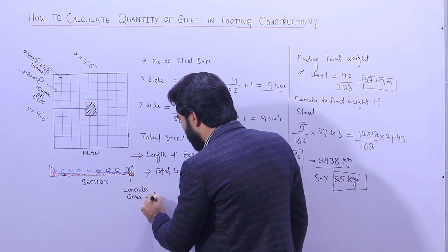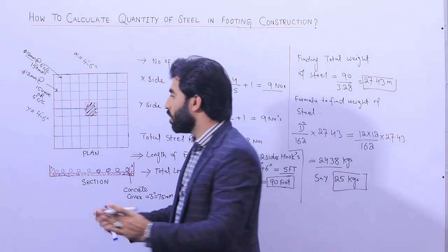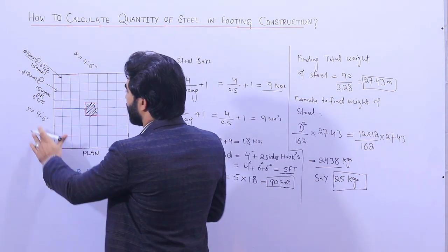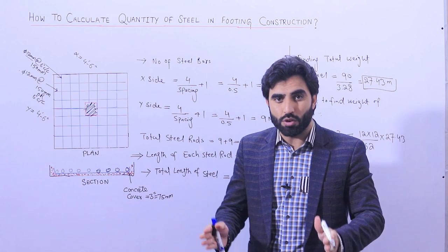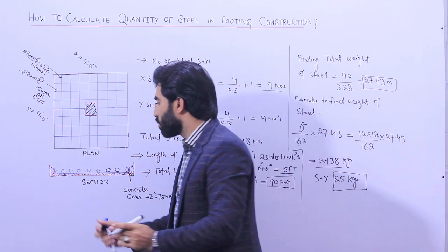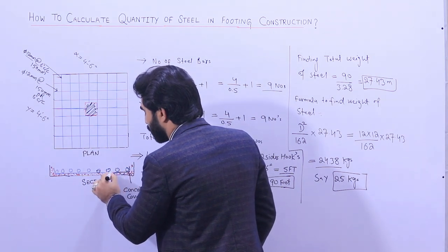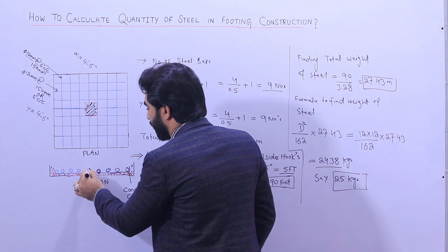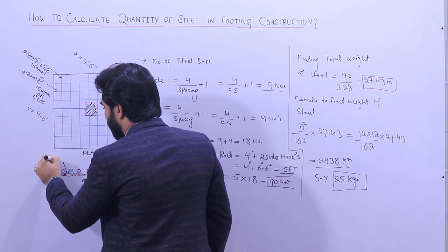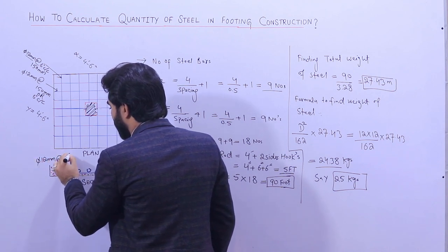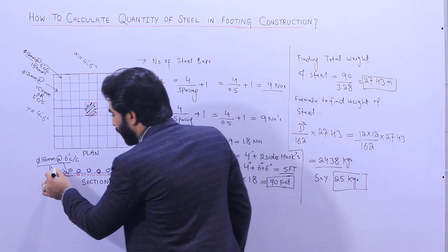The concrete cover is 3 inches or 75 millimeters on both the left side and the right side. Therefore, in the plan, the overall footing size is 4 feet 6 inches by 4 feet 6 inches, but the steel reinforcement mesh size is 4 feet by 4 feet, since the covers reduce the mesh dimensions. As shown, these are the main bars and distribution bars, and we are using 12 millimeter diameter steel rods with 6-inch center-to-center spacing in both directions.